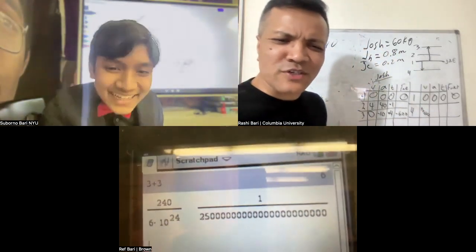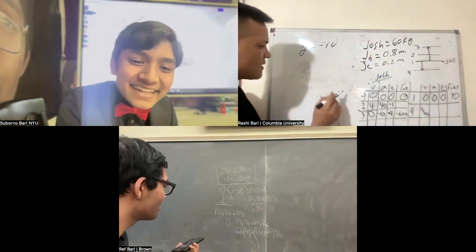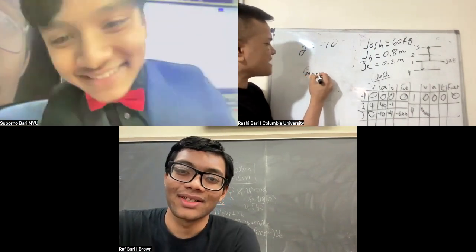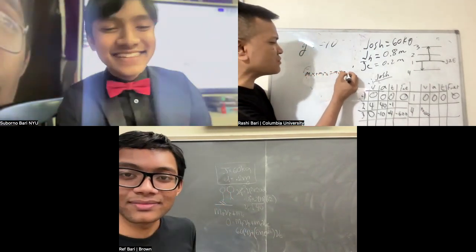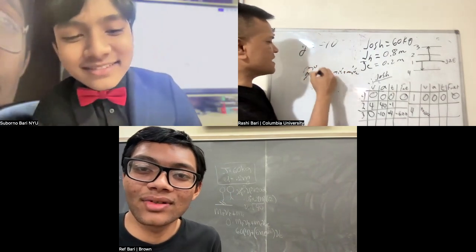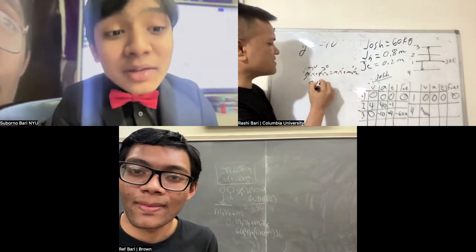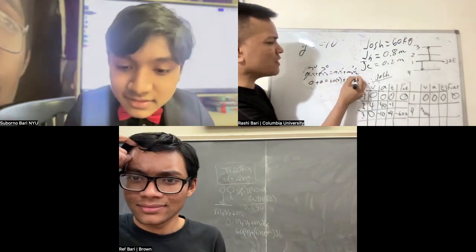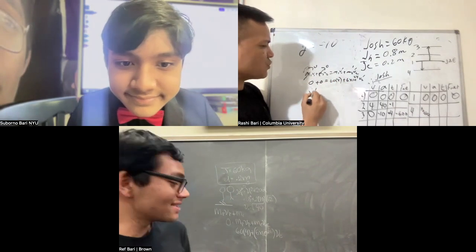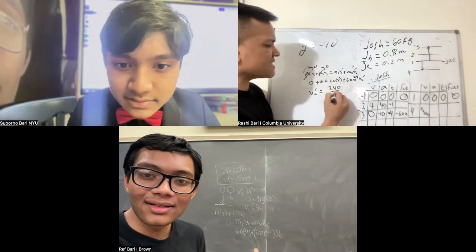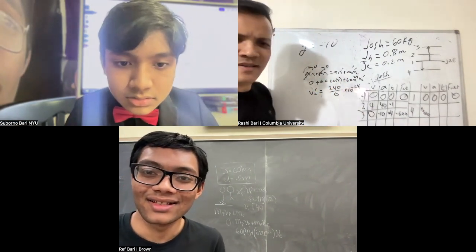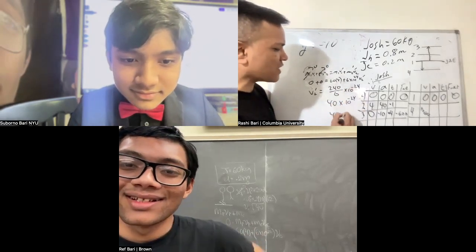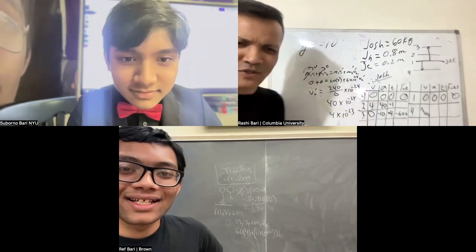Now find the recoil velocity of the art. You just have to use conservation of momentum. m1v1 plus m2v2 equals m1v1 prime plus m2v2 prime. 60 times 4 plus 6 times 10 to the negative 23 equals... v2 prime equals 240 divided by 6 times 10 to the negative 24, which is 4 times 10 to the negative 23. That's what I got.